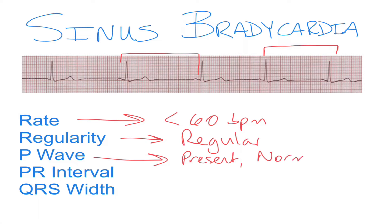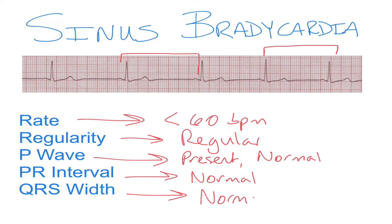The P waves are going to be normal in shape. The PR interval is going to be normal — remember, normal is one large box on the EKG paper. Your QRS width will be normal as well. So if you've got what looks like normal sinus rhythm that's less than 60 beats per minute, everything's looking regular and normal, chances are you're looking at sinus bradycardia.